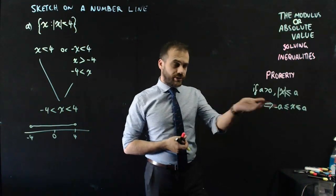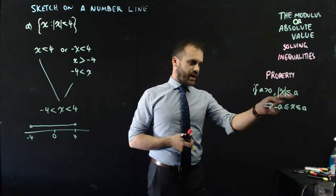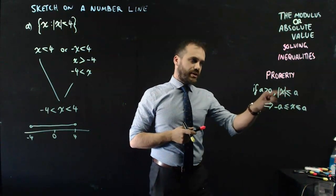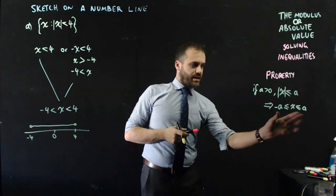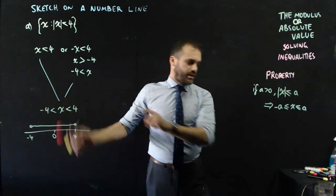Now we can create a neat little property for that that says, if a is greater than 0, so if a is positive, which it was in this case, then the absolute value of x is less than or equal to a can be written as negative a is less than x, which is less than a, which is what's happened here.